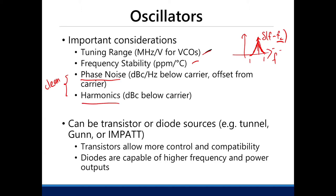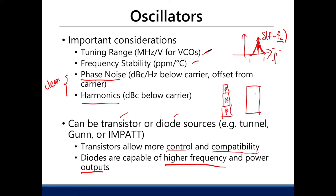What devices can we use for oscillators? We can use transistors or diodes. Transistors allow for more control and compatibility and are easy to design. Diodes are capable of higher frequency and power outputs due to their simpler design. Transistors have complicated arrangements such as PNP or JFET, where you have an N-type body and a P-type coating. Diodes are simpler because the geometry is easier to predict.